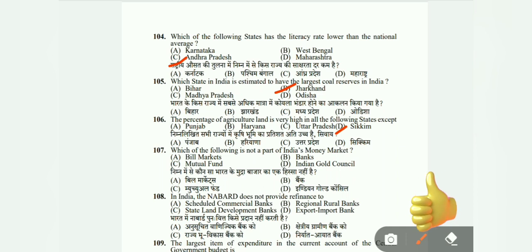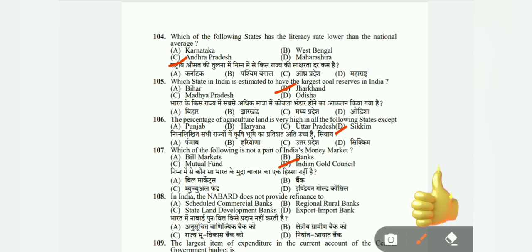Question 107: Which of the following is not part of India's money market — bill market, call money market, mutual fund, or Indian Gold Council? The answer is D, Indian Gold Council. Question 108: NABARD does not provide finance to scheduled commercial banks, regional rural banks, state land development banks, or export-import banks? The correct answer is D, export-import bank.